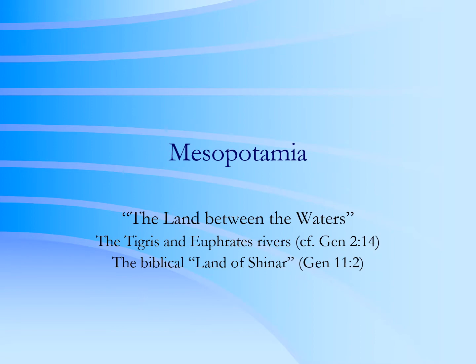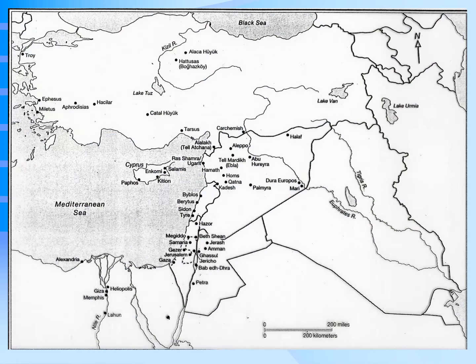Mesopotamia means the land between the waters — that is, the land through which the Tigris and Euphrates rivers flow, the Biblical land of Shinar, modern Iraq.